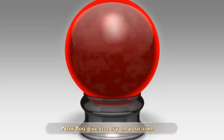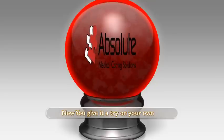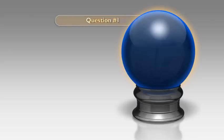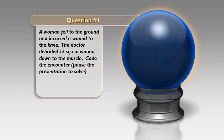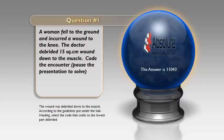Question 1: a woman fell to the ground and incurred a wound to the knee. The doctor debrided a 15 square centimeter wound down to the muscle. Code the encounter. If you said 11043, you are correct. The wound was debrided down to the muscle. According to guidelines just under the subheading, select the code that codes to the lowest part debrided — and that is muscle.